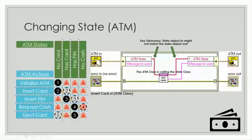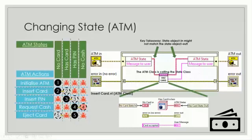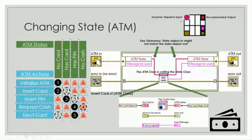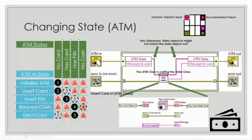Insert card is a dynamic dispatch VI called 'has card,' based on a particular state. The ATM state going through could be no card, has card, has PIN, or no cash. If no card comes in and we insert a card, has card should come out. The key takeaway is that the state object input might not match the state object output. Inside the VI, no card comes in but has card comes out. This works because the connector pane has a dynamic dispatch input but only a recommended output — as long as the recommended output is implemented by the states interface.